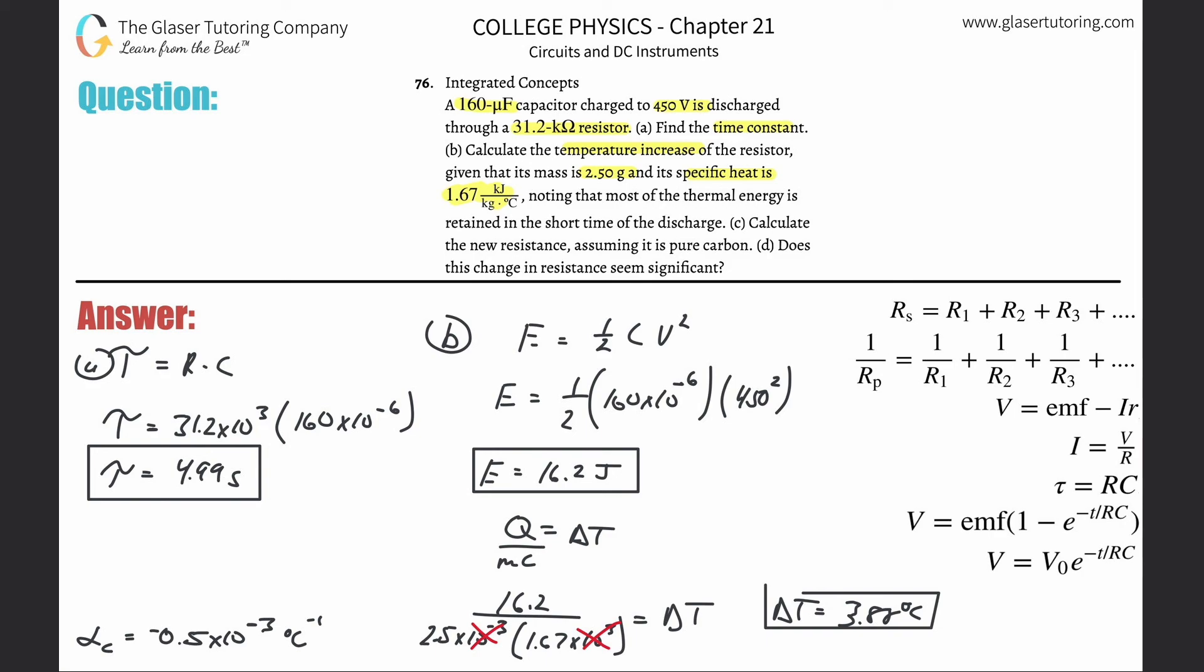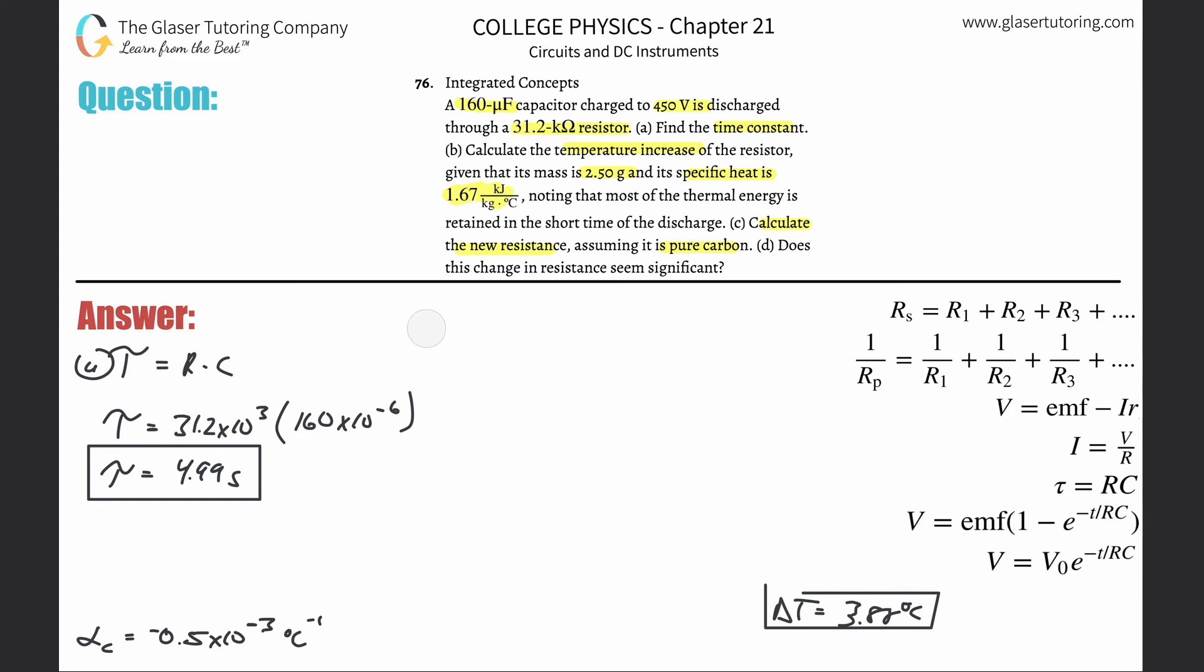All right, that takes care of letter B. Now letter C says calculate the new resistance, assuming it is pure carbon. So basically what they want you to do is use your change in resistance formula. The final resistance is equal to that initial resistance multiplied by 1 plus our alpha value times the change in temperature. Now you have to look up that alpha value for carbon.